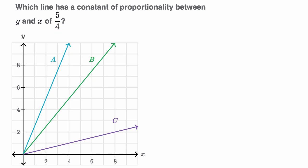So the key realization is we should test points on these lines. We should test x-y pairs and say, well, if we take our y divided by x, do we get five-fourths? Because that would be our constant of proportionality.